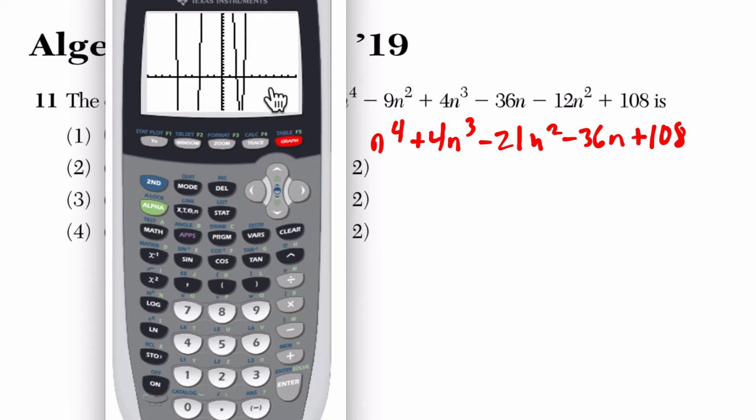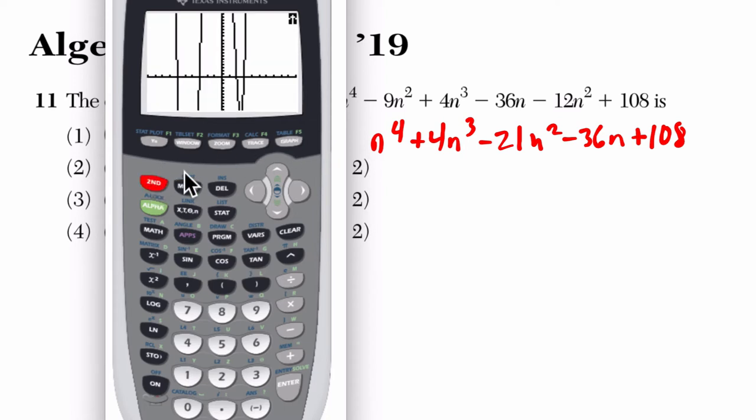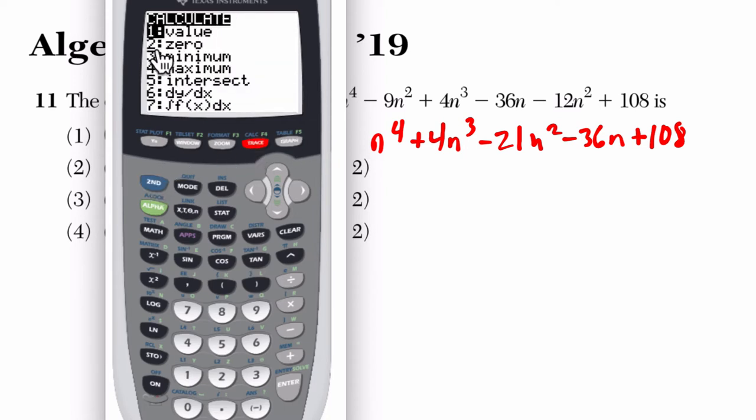So I mean, we could keep resizing this window to figure out what's going on, but what I like to do, you can either look at the table. You can see some of the zeros here. Or you can use the graph by hitting graph and then second trace. And choice 2, 0, that would tell you the zeros of the function.